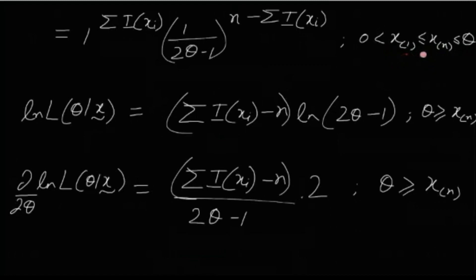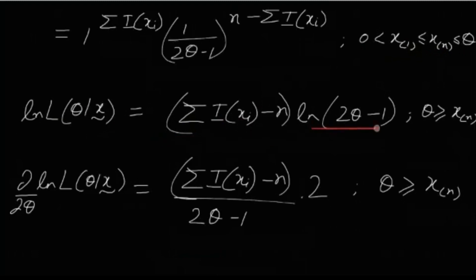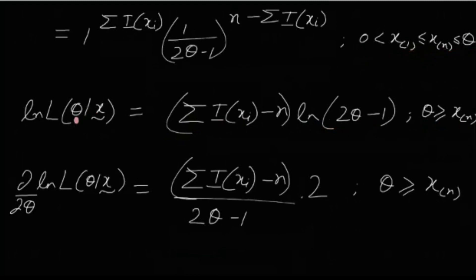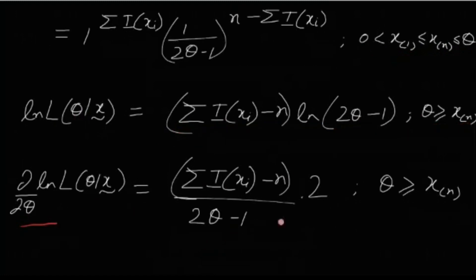Taking the natural log of the likelihood function, the log-likelihood is (Σi(xi) − n) × log(2θ − 1), for θ ≥ x(n). Differentiating with respect to θ, we get the derivative of the log-likelihood, which we evaluate for θ ≥ x(n).